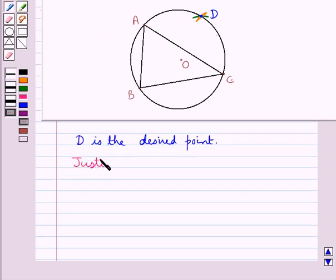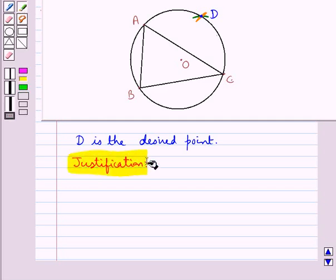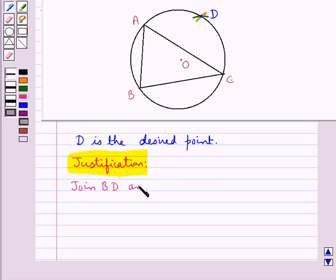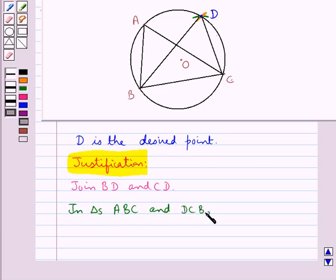Now for the justification of this construction that we have done, we will join BD and CD. Next we will consider the triangles ABC and DCB. Now in these two triangles we have the side AB of triangle ABC is equal to the side DC of the triangle DCB.